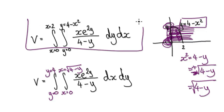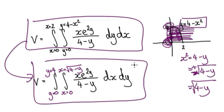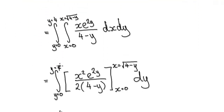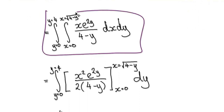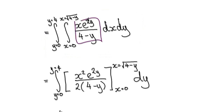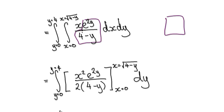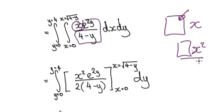Now we can integrate with respect to x first. The integrand has x here, and the remaining block can be treated as a constant. When you integrate x times that constant block, you get x² over 2 times the block — so a factor of one half appears, giving that block divided by two.